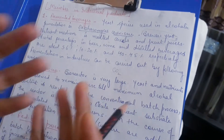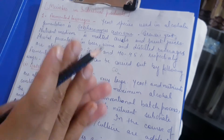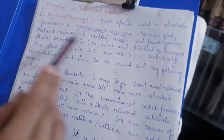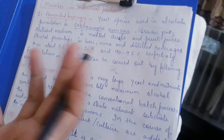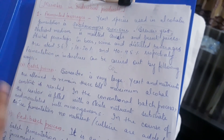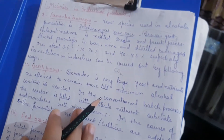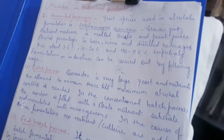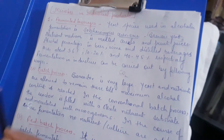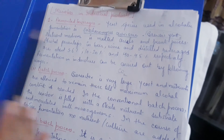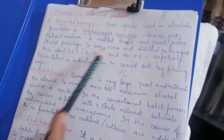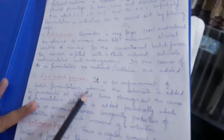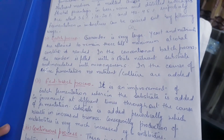When making alcohol, the nutrient medium contains cereals and fruit juices. Alcoholic beverages include wine, whiskey, and beer. They differ based on alcohol content: beer has around 3–6% alcohol, wine has 10–20%, and distilled beverages have even more. The type of beverage depends on how much alcohol is present.